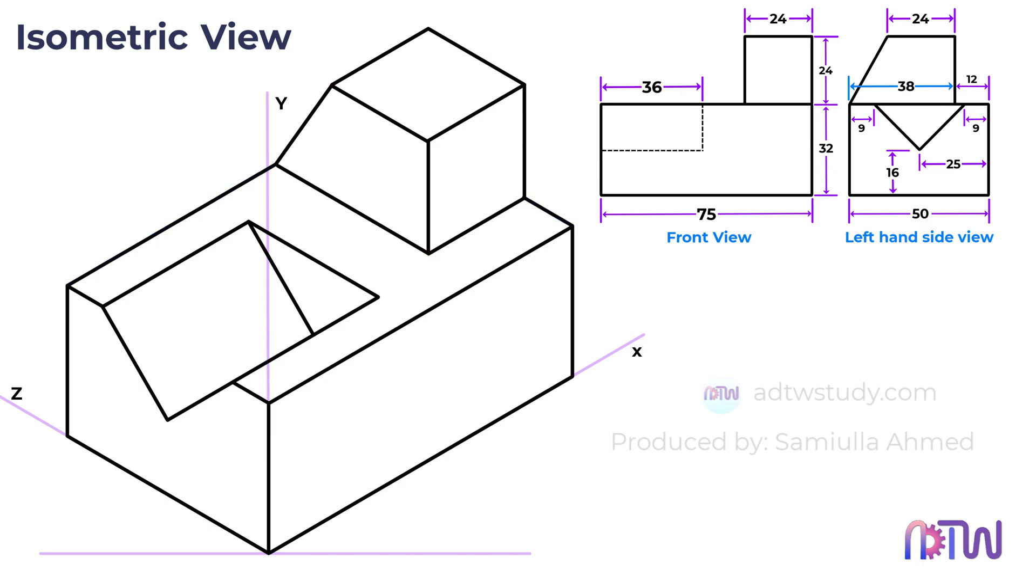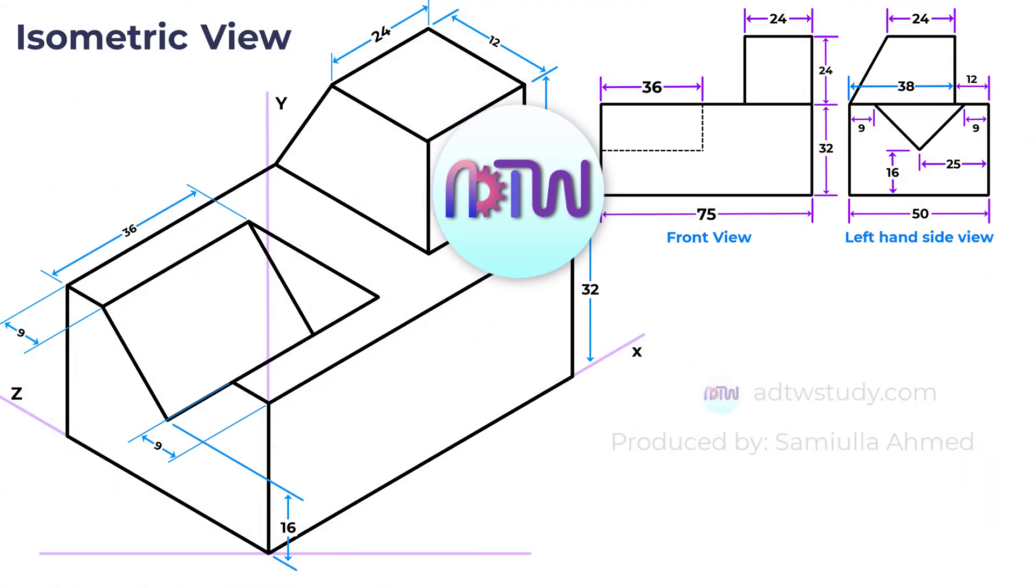This completes the isometric view for the given orthographic projections. This is the final required isometric view. I hope this tutorial helped to understand how to construct the isometric view of an object from its orthographic projections.